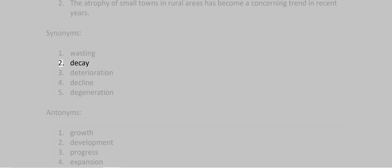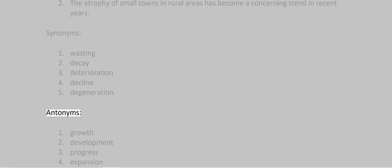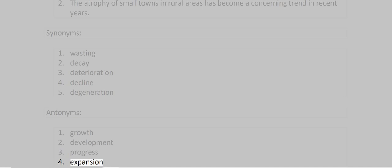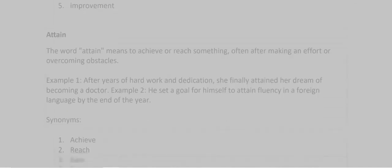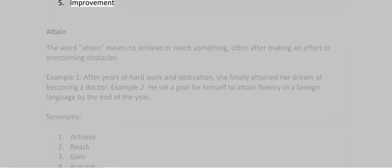Synonyms: 1. Wasting 2. Decay 3. Deterioration 4. Decline 5. Degeneration. Antonyms: 1. Growth 2. Development 3. Progress 4. Expansion 5. Improvement.